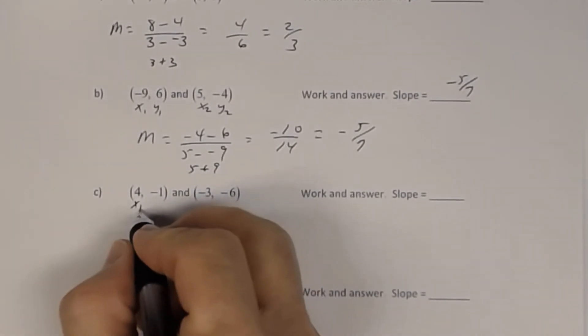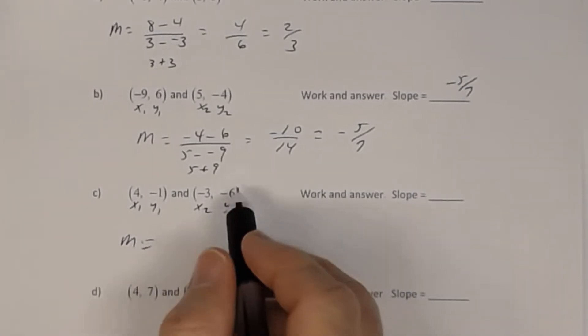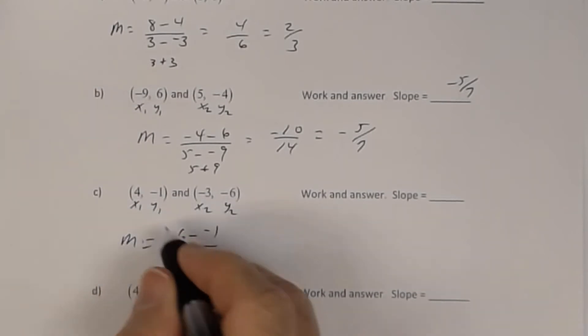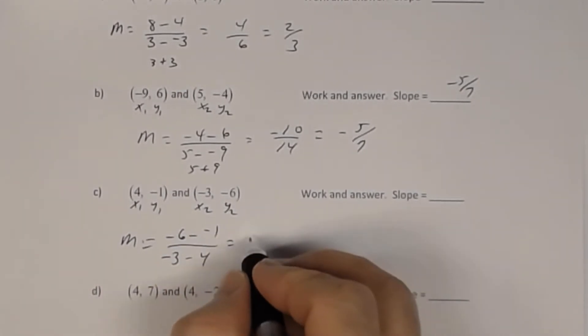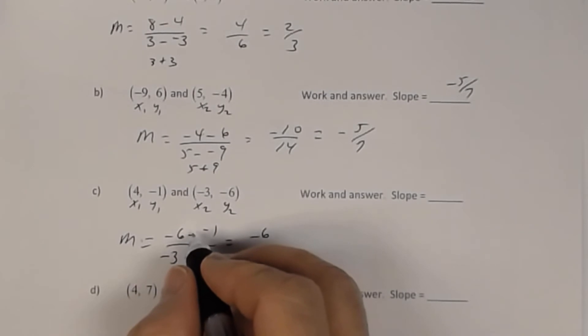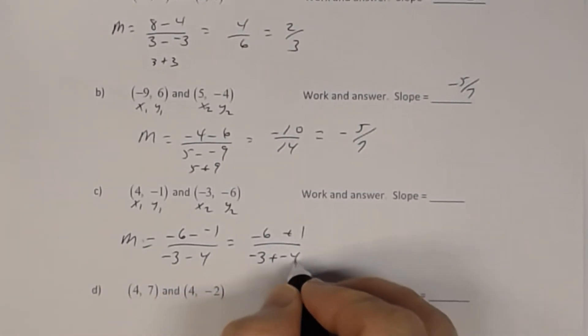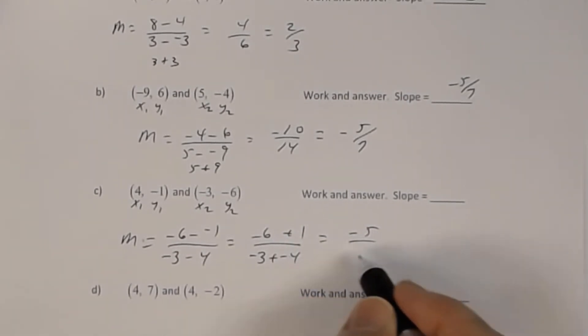Part C, same thing: x1, y1, x2, y2. So the slope will be negative 6 subtract negative 1 divided by negative 3 subtract 4. Now let's think about what this is. Negative 6 subtract negative 1 means negative 6 plus 1. Remember, with subtraction, you change it to addition—add the opposite. The opposite of negative 1 is positive 1. Then negative 3 plus negative 4.